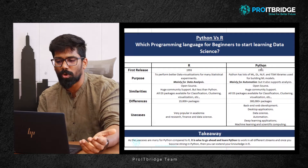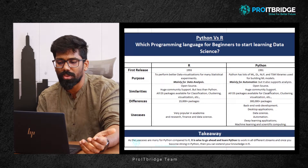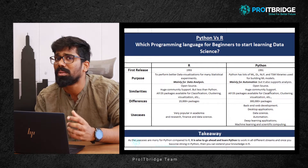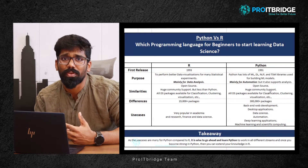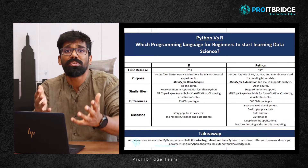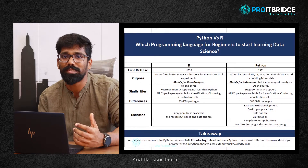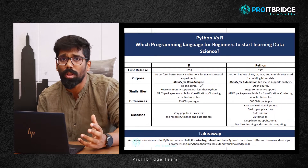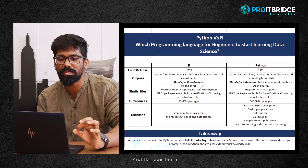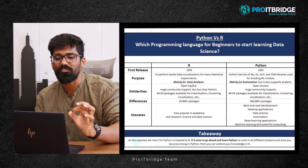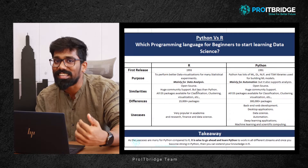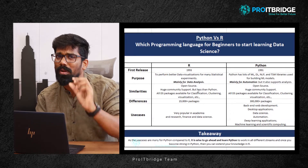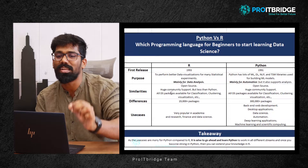R has huge community support, and Python also has huge community support, meaning whenever you're working with this kind of scripting and you face some difficulties, if you just go and Google it, you will get support easily. Both programming languages have an equal amount of support, though R has comparatively a little less than Python.